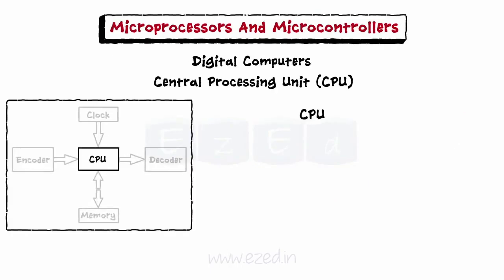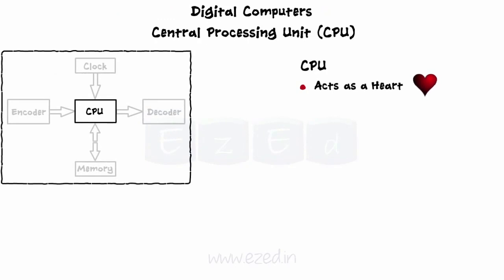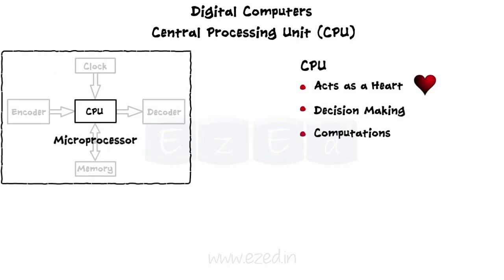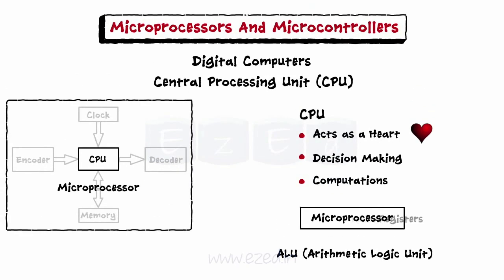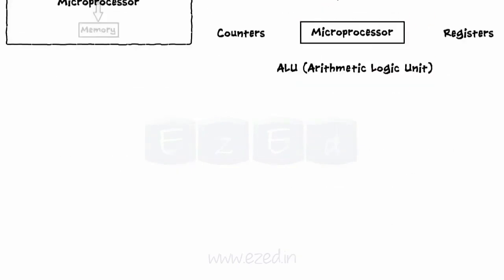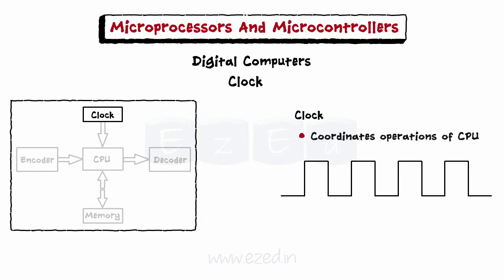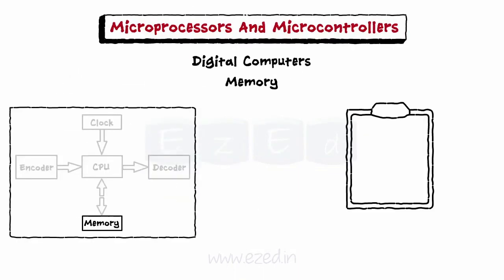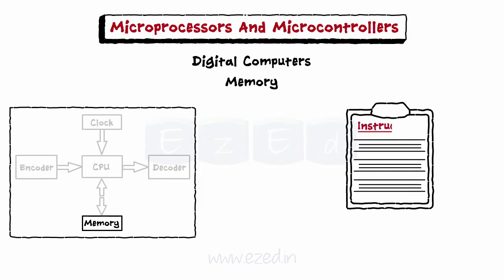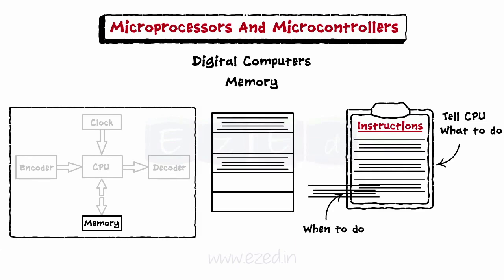The first block is CPU. It acts as the heart of a digital computer. As per its name, it carries out all the decision-making and computations. It is also called a microprocessor. A microprocessor is an electronic device that consists of ALU, Arithmetic Logic Unit, and a number of registers and counters. The next block is clock — a square wave signal having a fixed frequency which coordinates all the operations of the CPU. When we say the processor is 2 GHz, we are determining the frequency of that processor. The next block is memory. All the computations of a CPU depend on different sets of instructions which tell the CPU what to do and when to do it. The part of the computer where these programs are stored is called memory.